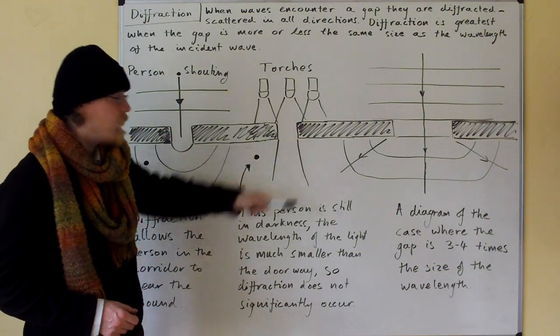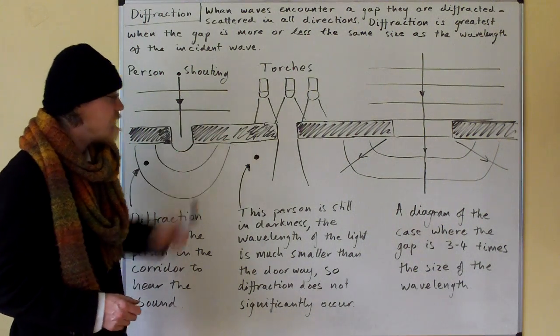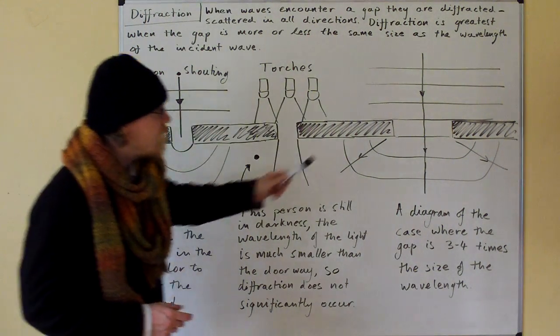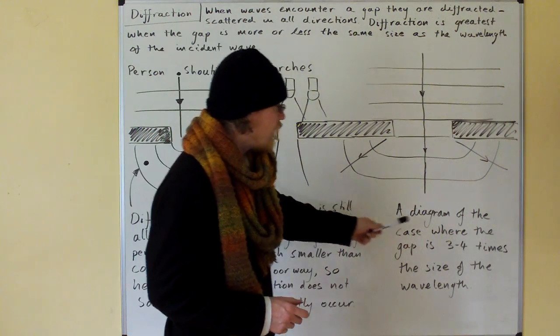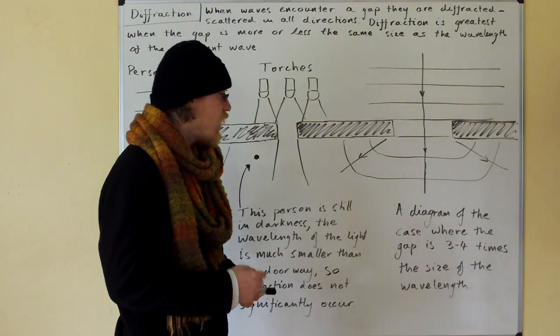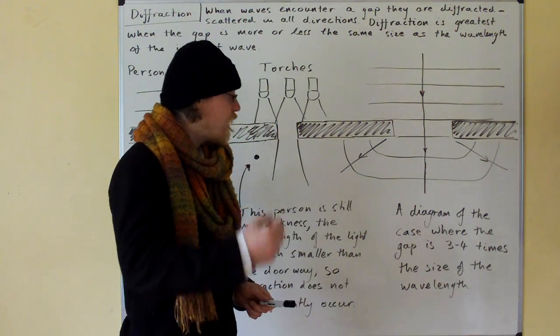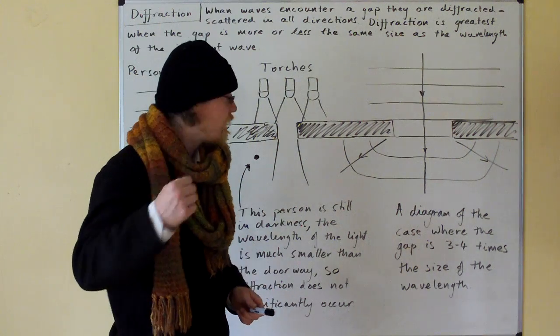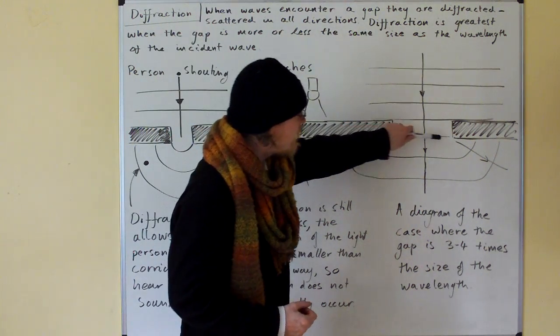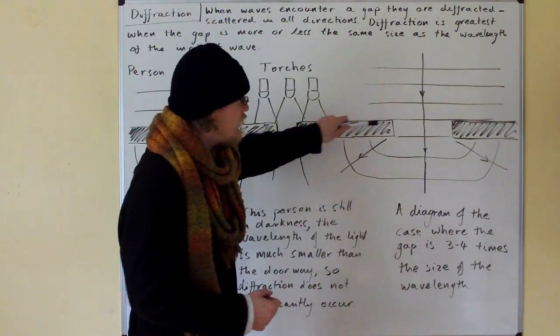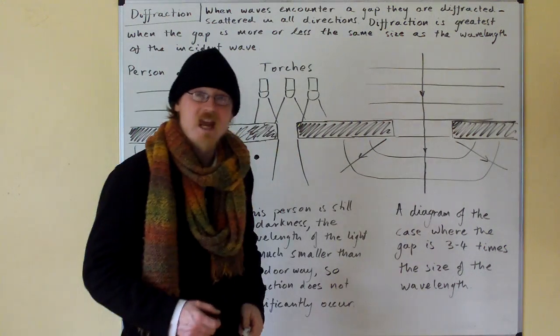And there is just a beam of light here which the person can see that they themselves remain in darkness. And finally we have the situation of a diagram of the case where the gap is three to four times the size of the wavelength. And so we don't get diffraction in the middle but we do get scattering at the edges.